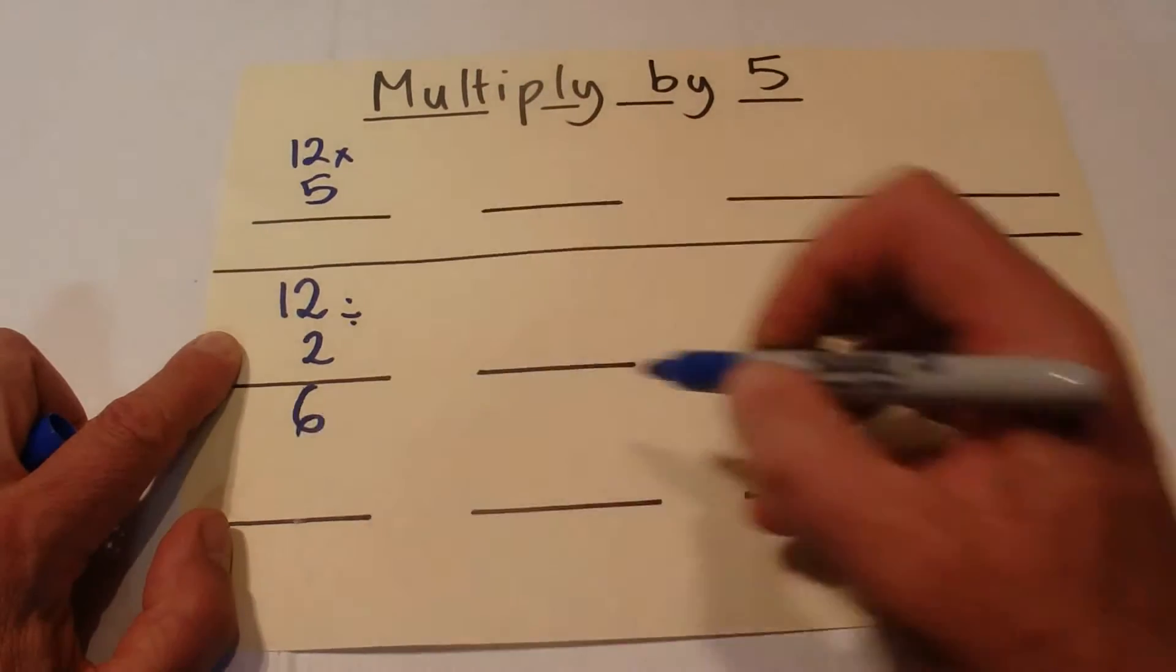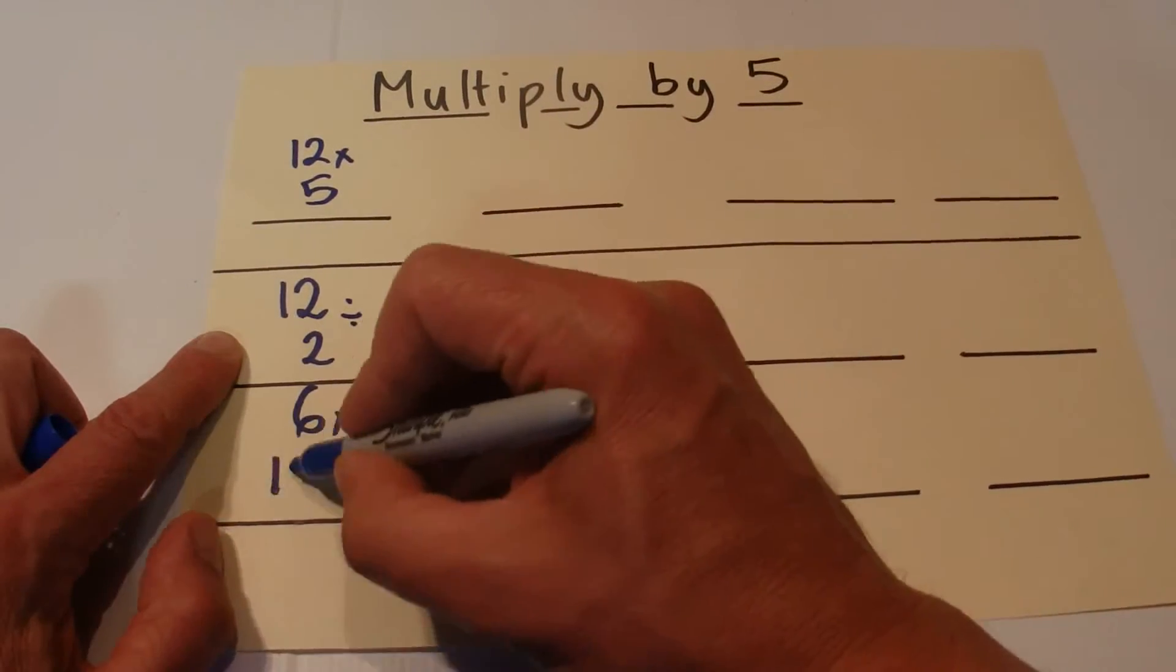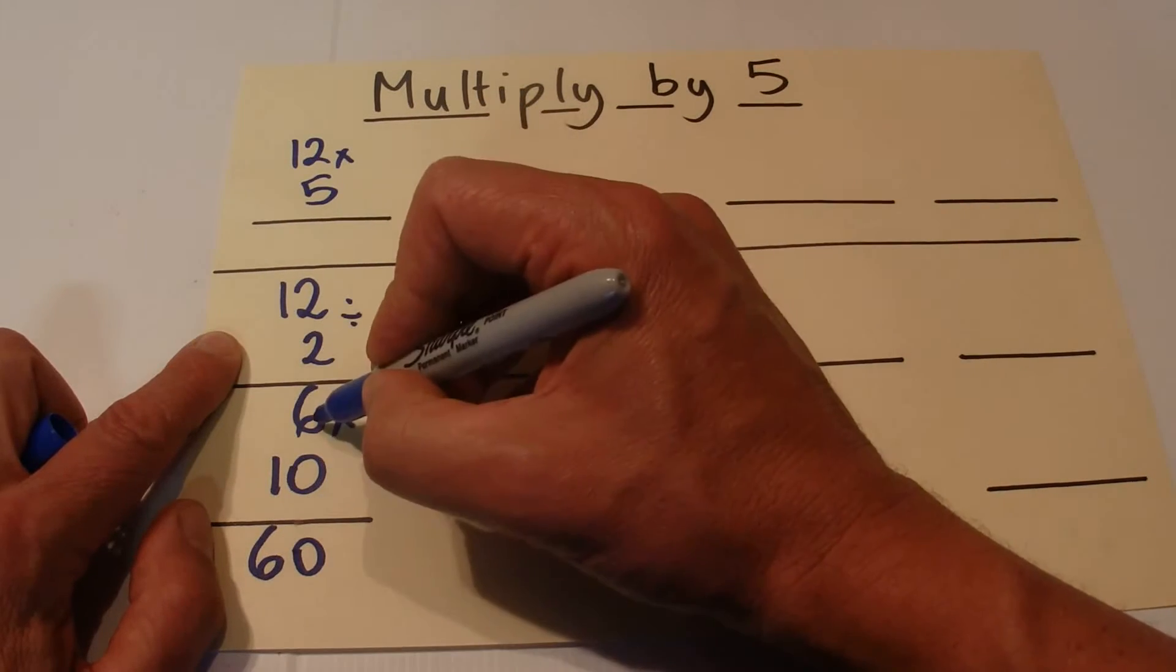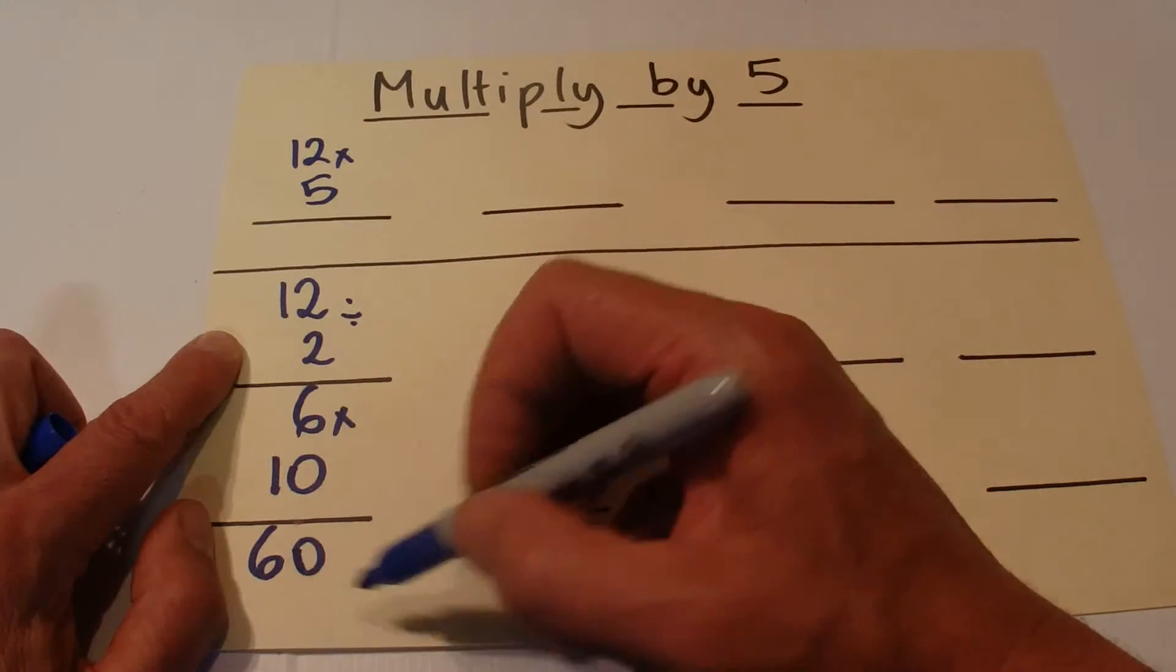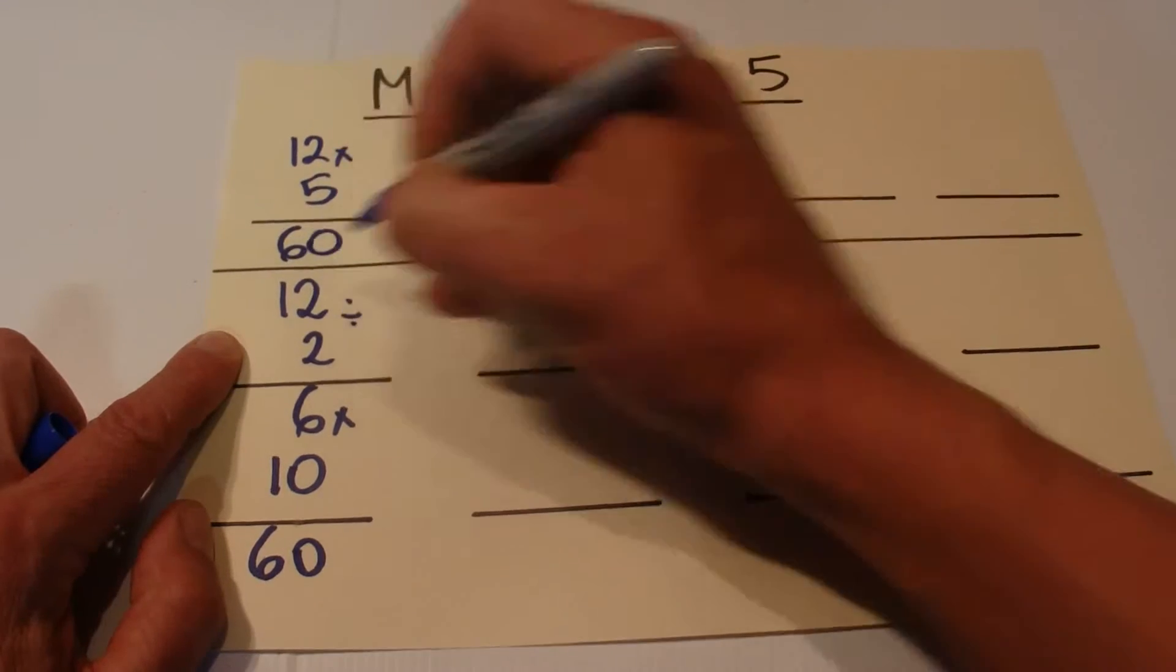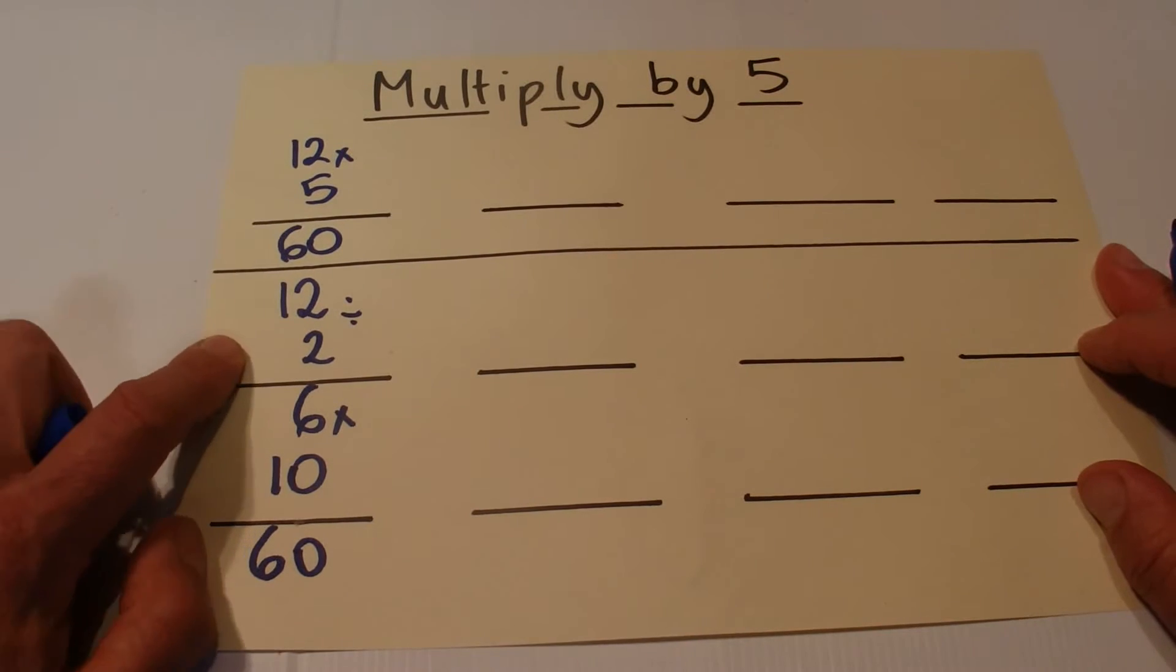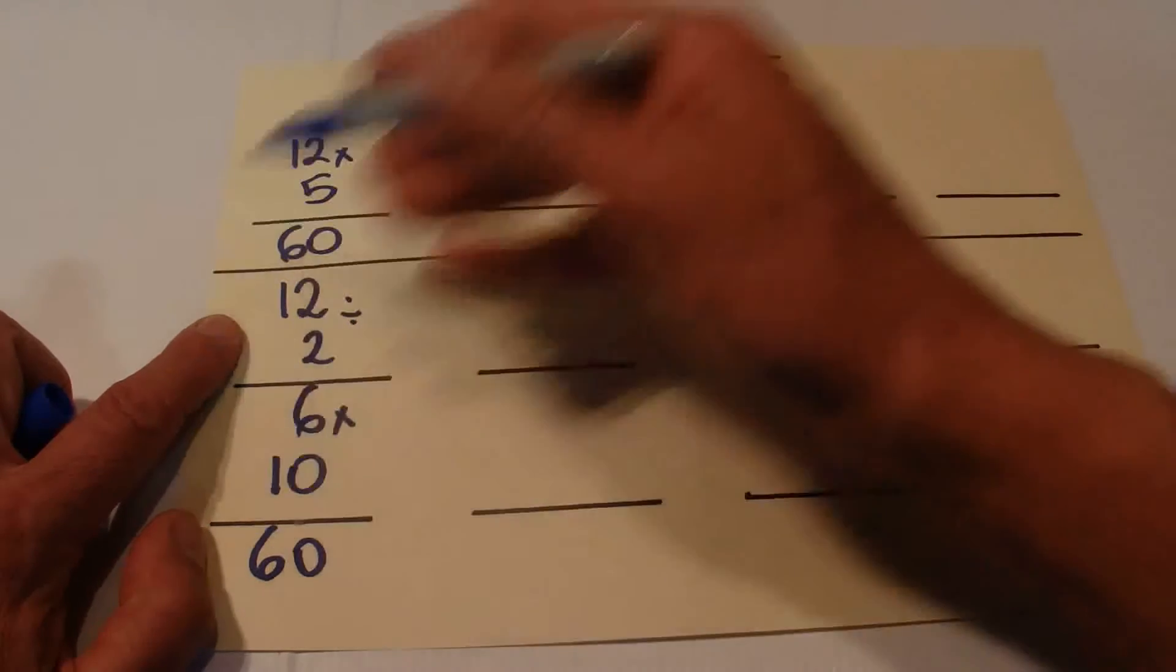So 12, half of 12 is 6, and times by 10 is 60. That's the answer to 12 times 5 is 60. That's a fairly simple example so you can see what's happening in this calculation.